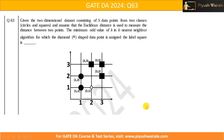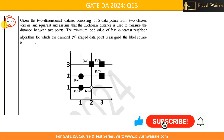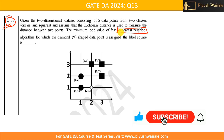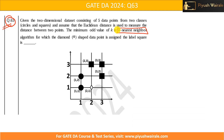In this video we are going to discuss question number 63 of GATE DA 2024 exam. This question is based on the KNN algorithm — K Nearest Neighbor.